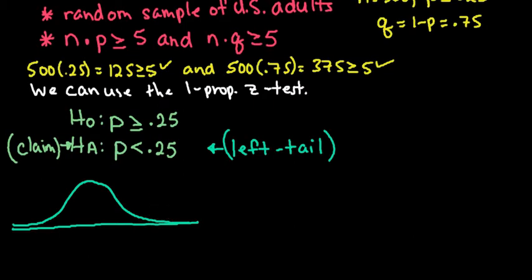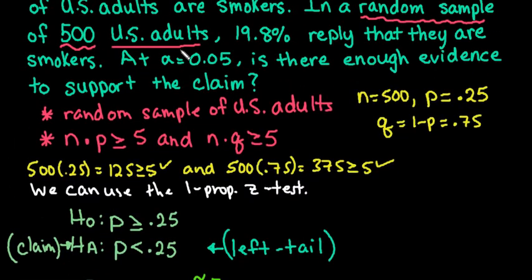Since I am using a rejection region decision rule, I am going to shade alpha. So I need to go back up into my problem and find what alpha is. We can see that alpha is 0.05.